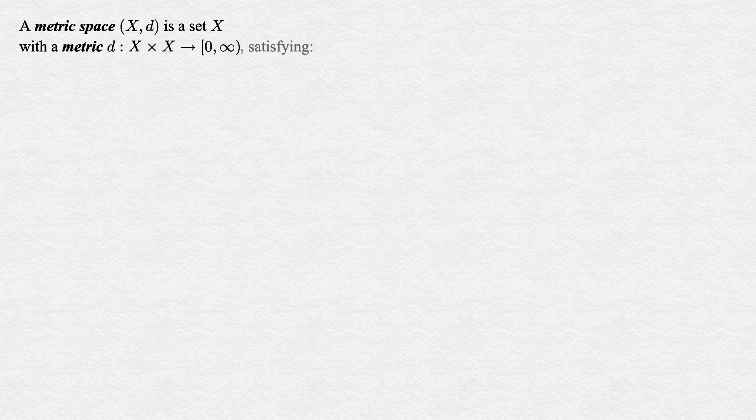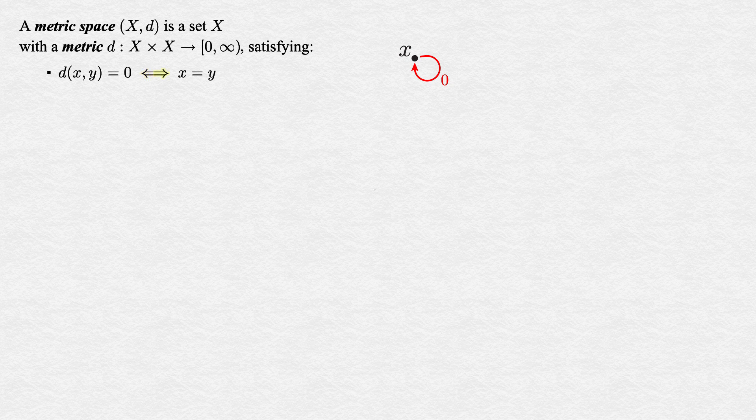This metric must satisfy three simple axioms. First, the distance from any point to itself must be zero, and this must be the only way a distance between two points can be zero.